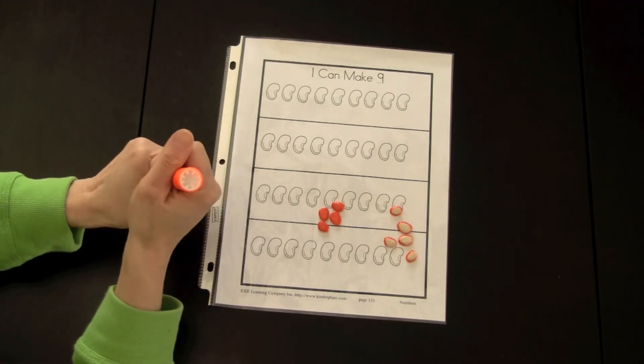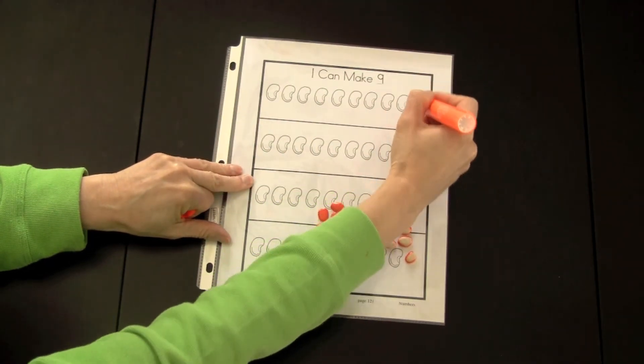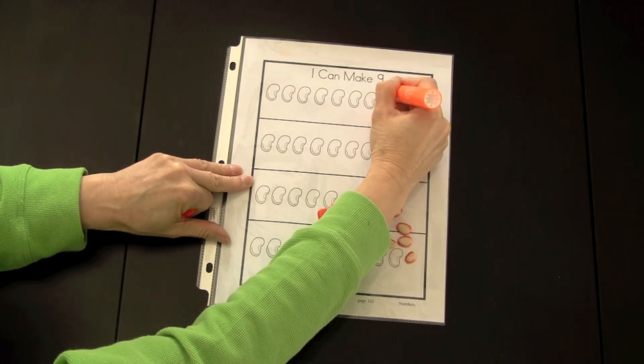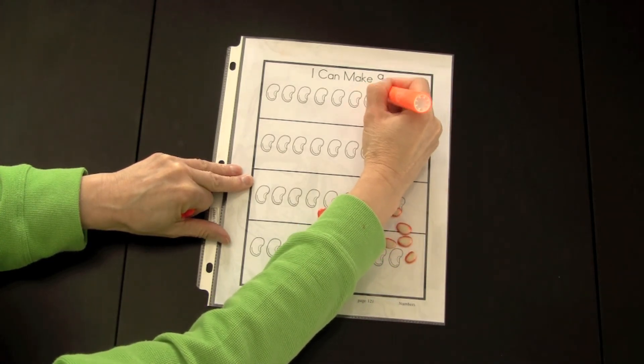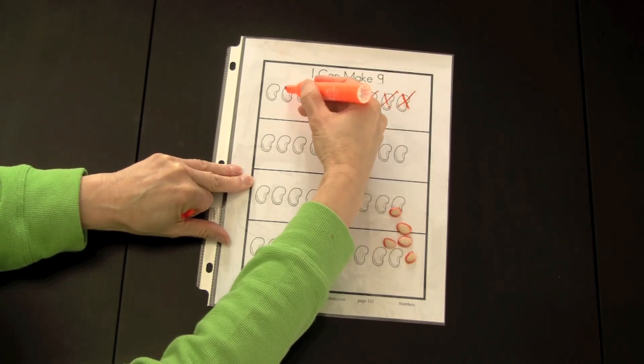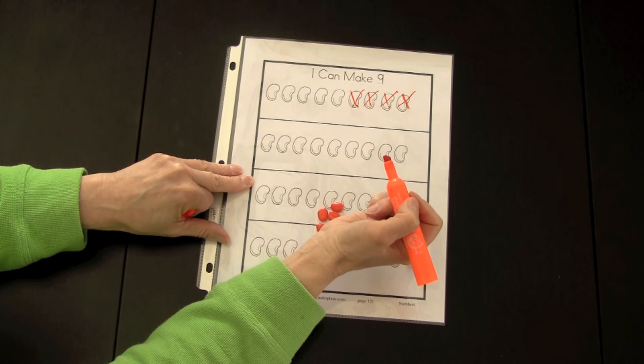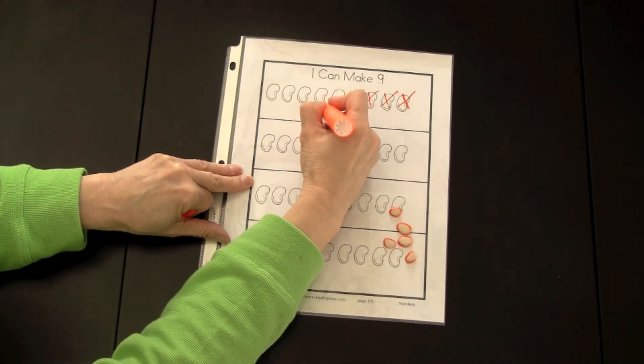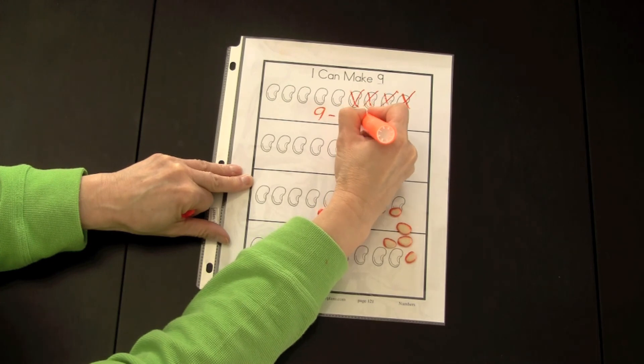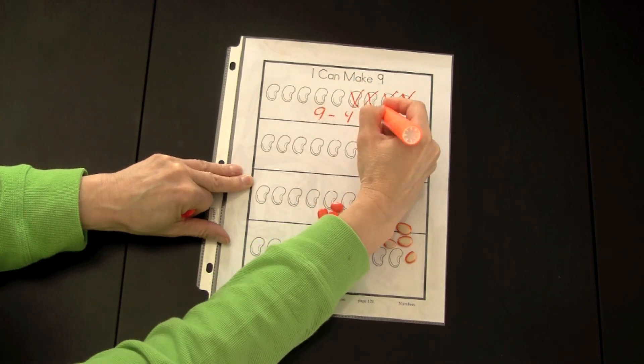Then they would cross these off on the chart. They know they have one, two, three, four, so they would cross these off. And then they would be left with one, two, three, four, five. So they could represent this in a sentence. They know they started out with nine and they took away four and then they were left with five.